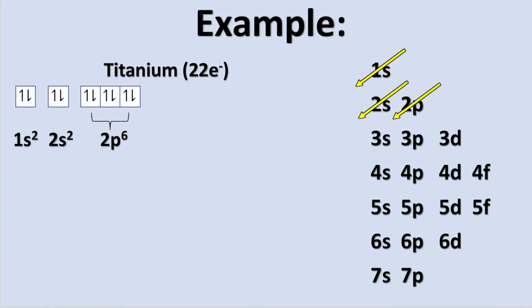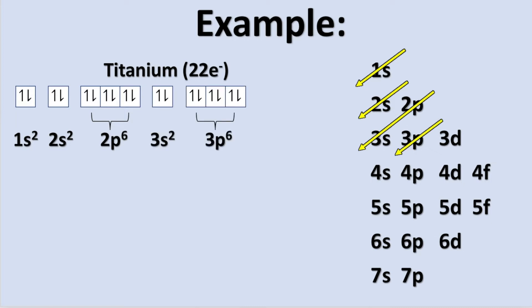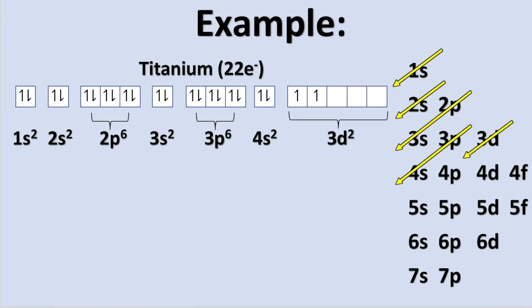We still have 12 electrons to distribute. We begin to fill the 3s and 3p to give us 1s2, 2s2, 2p6, 3s2, 3p6. At this point, when we go to distribute the last 4 electrons, it is important to note that we must fill the 4s orbital before the 3d. This is because the 4s orbital lies slightly lower in energy than the 3d orbital. And because of this, the 4s will be filled first and then we will fill the d orbital.